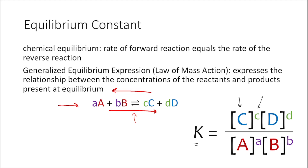This value for the equilibrium constant K allows us to express the relationship between the concentrations of reactants and products at equilibrium.